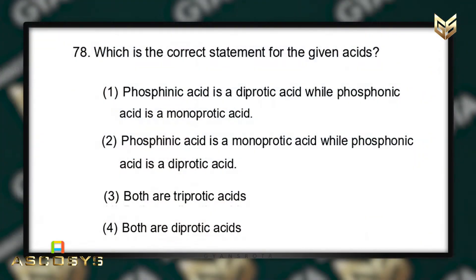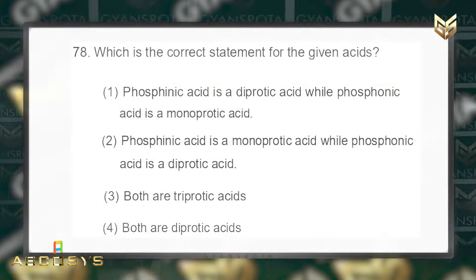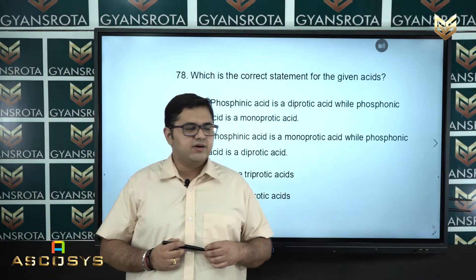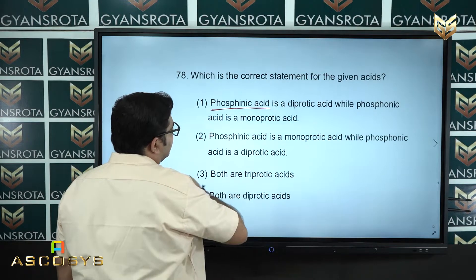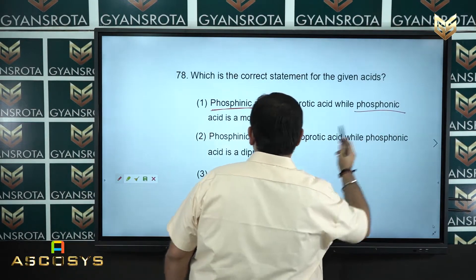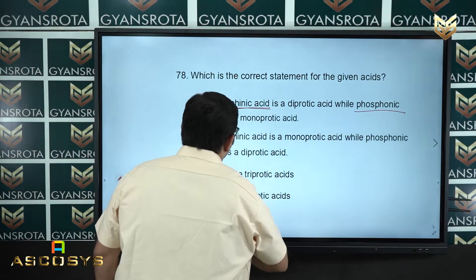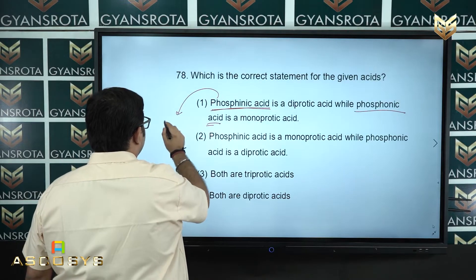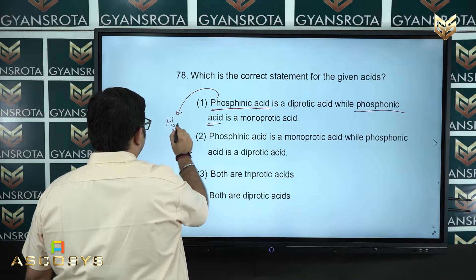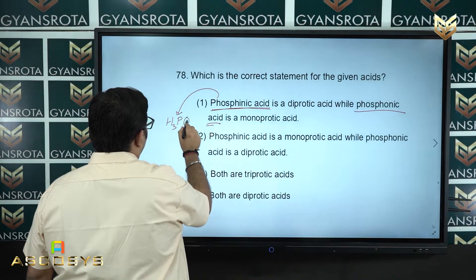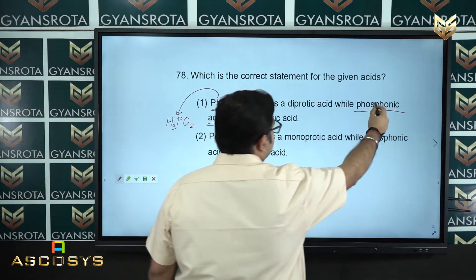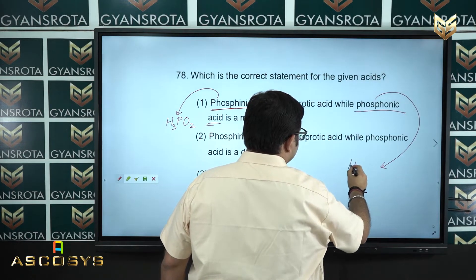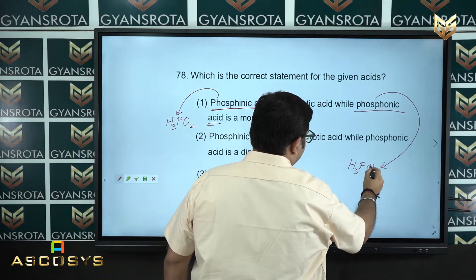Question number 78 is on your screen: which is the correct statement for the given acids? They have given phosphinic acid (H₃PO₂) and phosphonic acid (H₃PO₃).